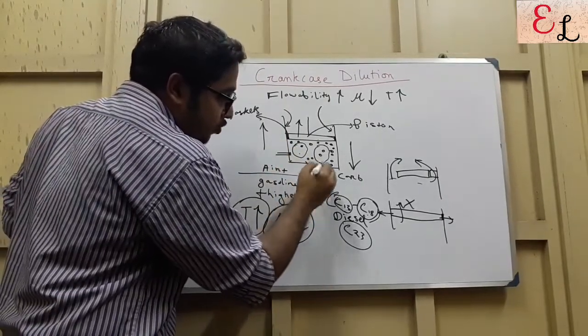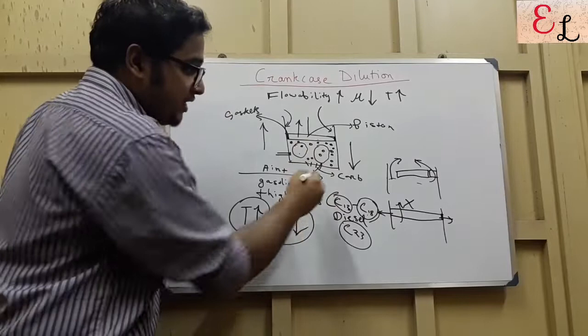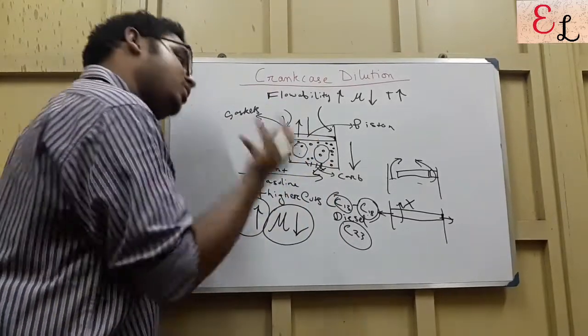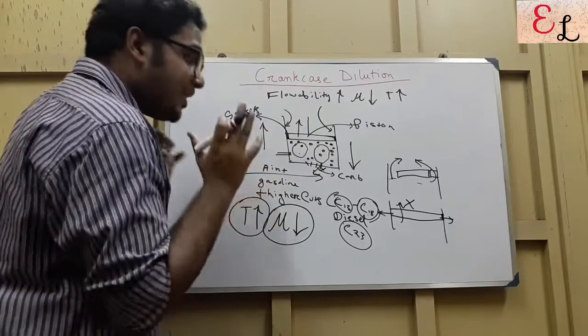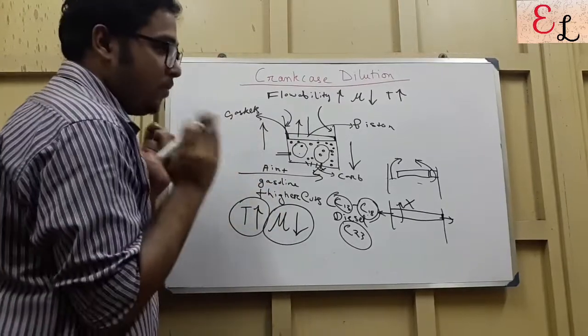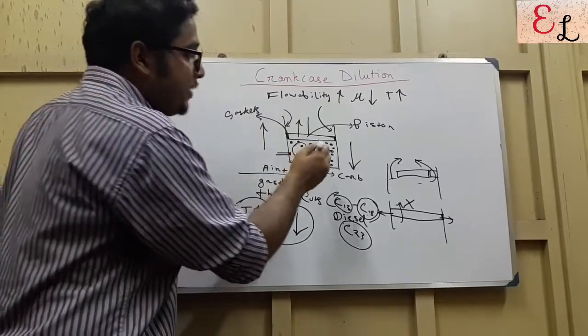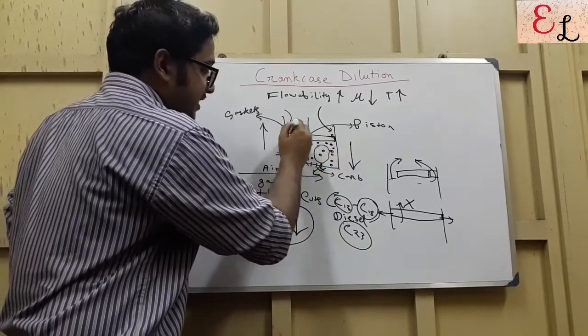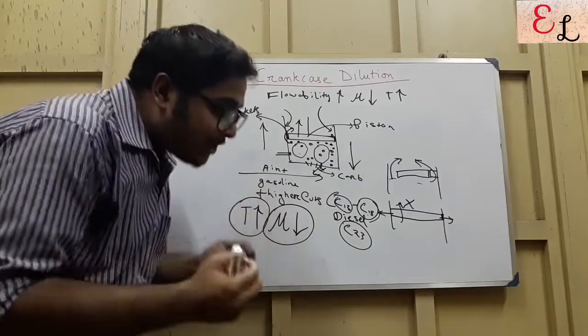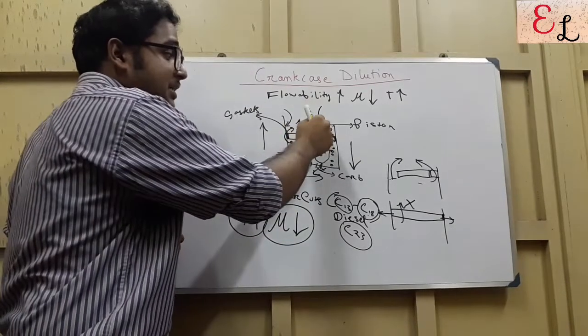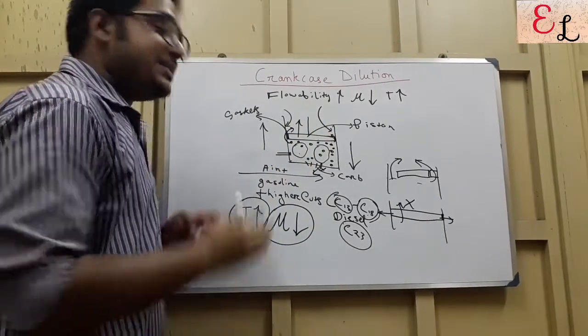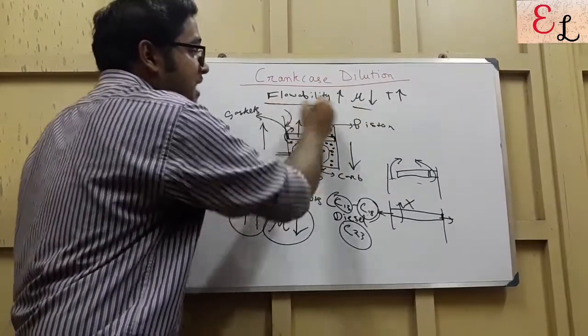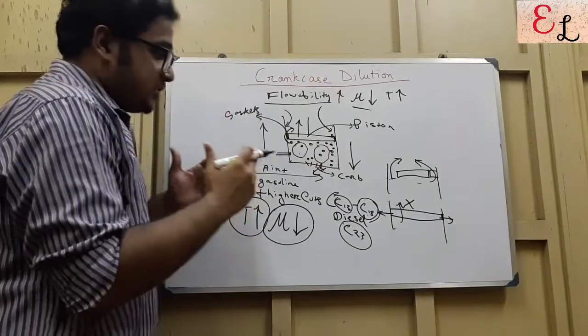Now, they cannot return back through the inlet valve, because the valve is already closed. Neither can they go out through the outlet valve now, because the outlet valve is also closed. So, where do they try to escape from? What do they do? They try to escape by any means through the pores in the gasket. So, they have a tendency to somehow go past through the gasket to the other side of the chamber. And their low viscosity and their high flowability ensures that they do so.